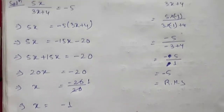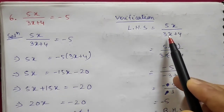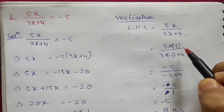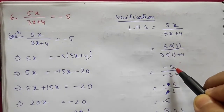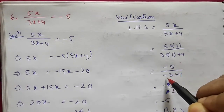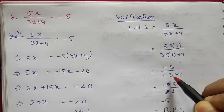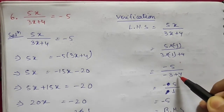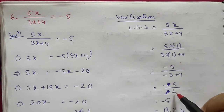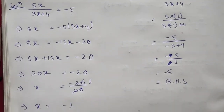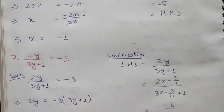Verification for question 6 with x = -1: LHS = 5×(-1) / (3×(-1) + 4) = -5 / (-3 + 4) = -5/1 = -5, which equals RHS. Therefore x = -1 is verified.